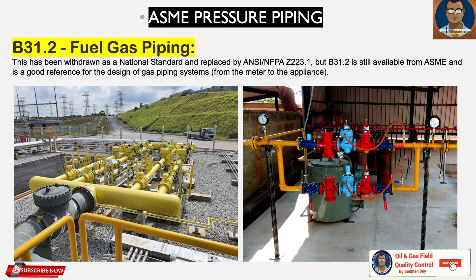B31.2 is for fuel gas piping. This has been withdrawn as a national standard and replaced by ANSI NFPA Z223.1. However, B31.2 is still available from ASME and is a good reference for the design of gas piping systems from the meter to the appliance.